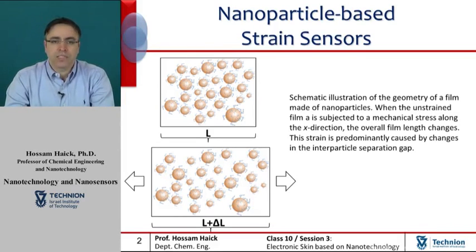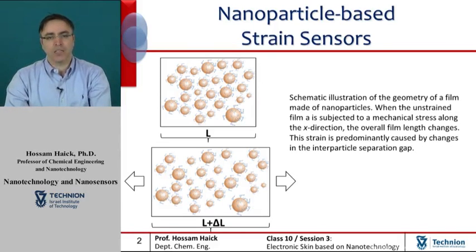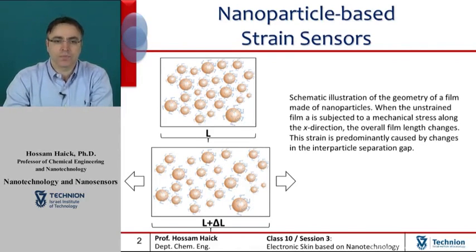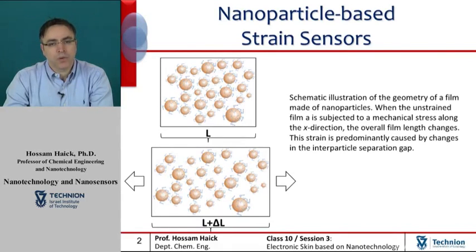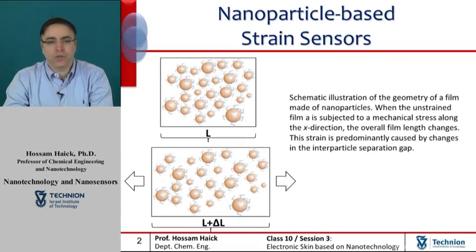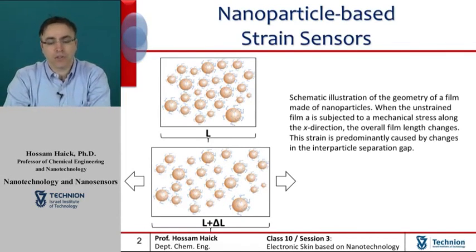Films of functionalized nanoparticles can function as highly sensitive strain gauges. The sensors exploit the exponential dependence of the interparticle tunnel resistance on particle separation. Their sensitivity, or the gauge factor, is two orders of magnitude higher than that of conventional metal foil gauges.